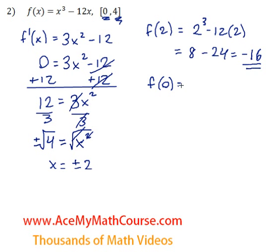Thereby we can find the absolute maximum and absolute minimum. What is f of 0? We have 0 cubed minus 12 times 0, which is just 0.